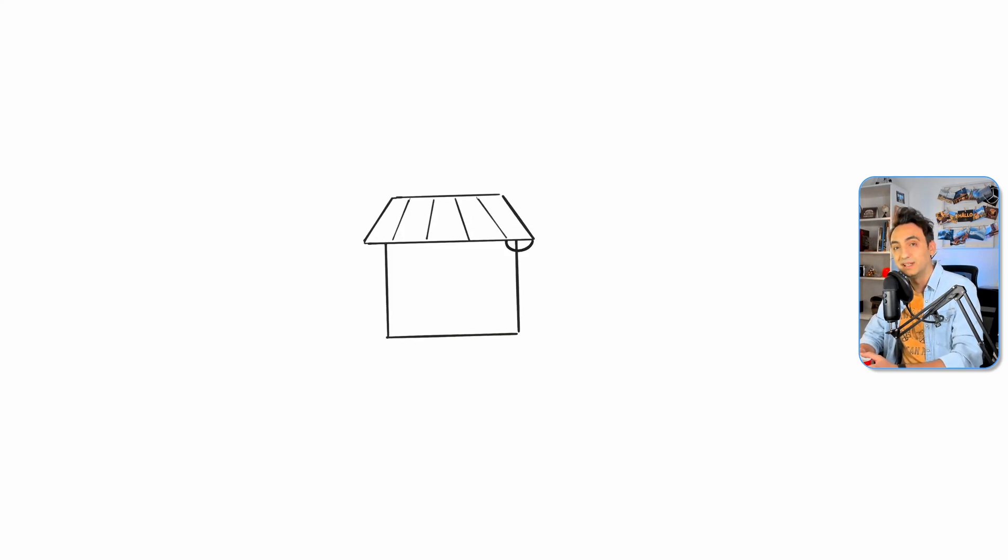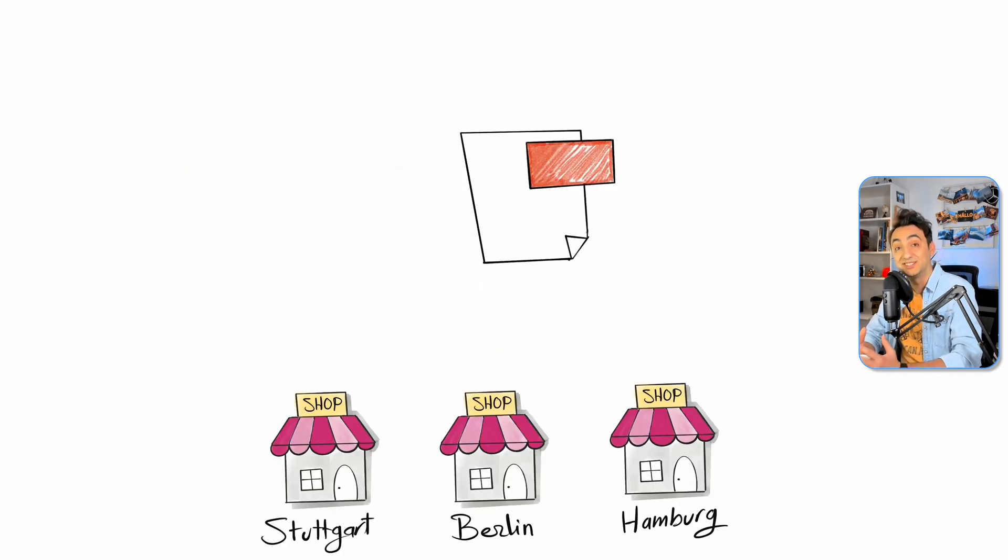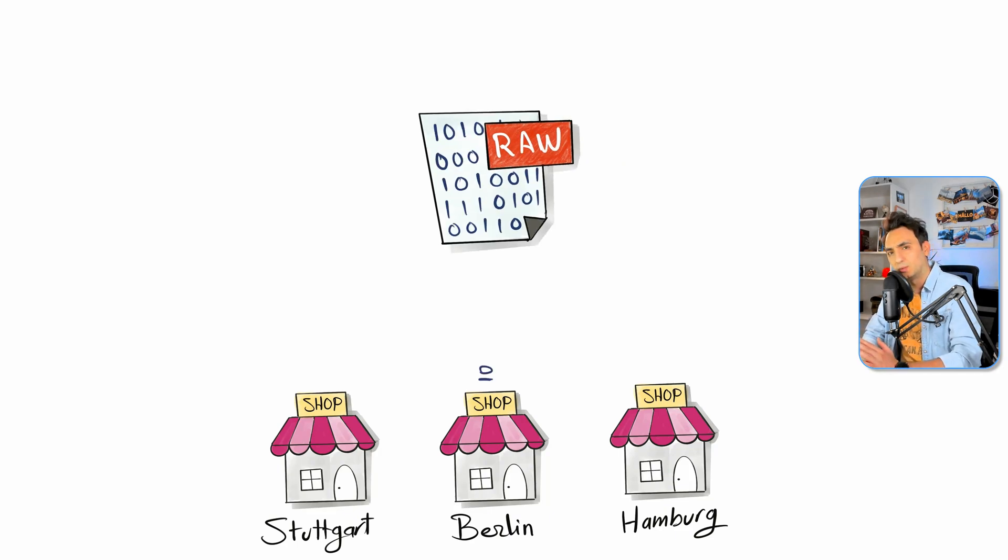All right, let me tell you this story. We have shops in three different cities in Germany: Stuttgart, Berlin, and Hamburg. These three shops are generating every business day a lot of raw data on sales, inventory levels, products, staff costs, and so on.